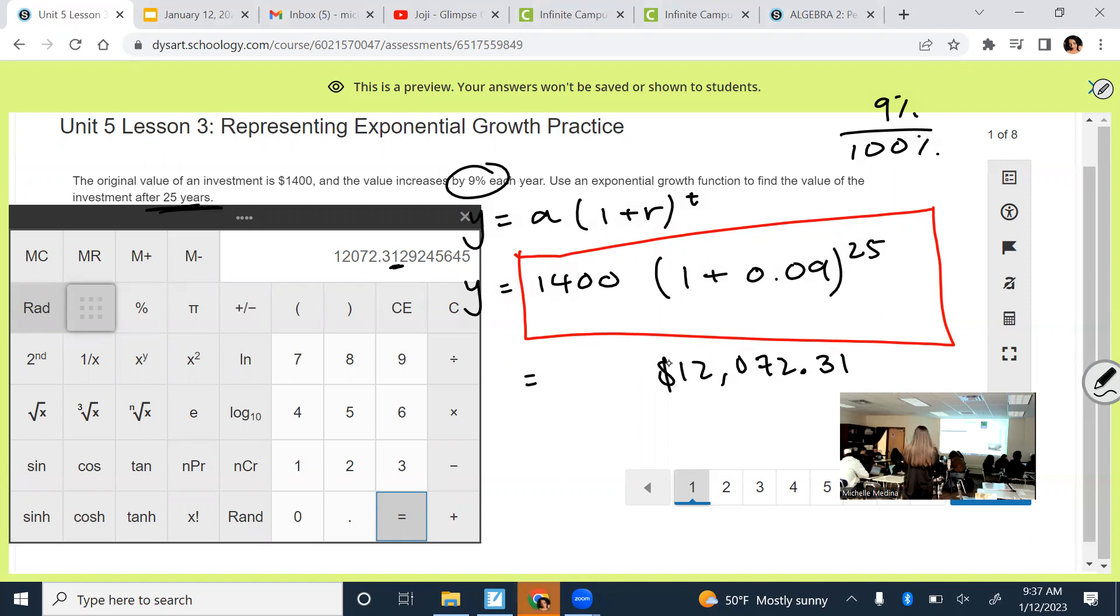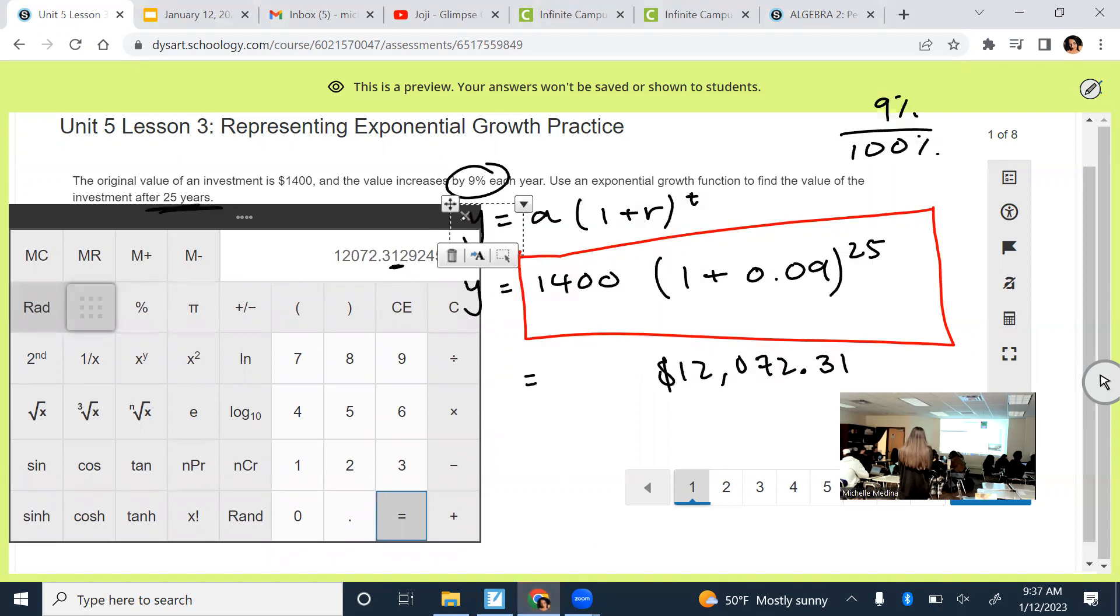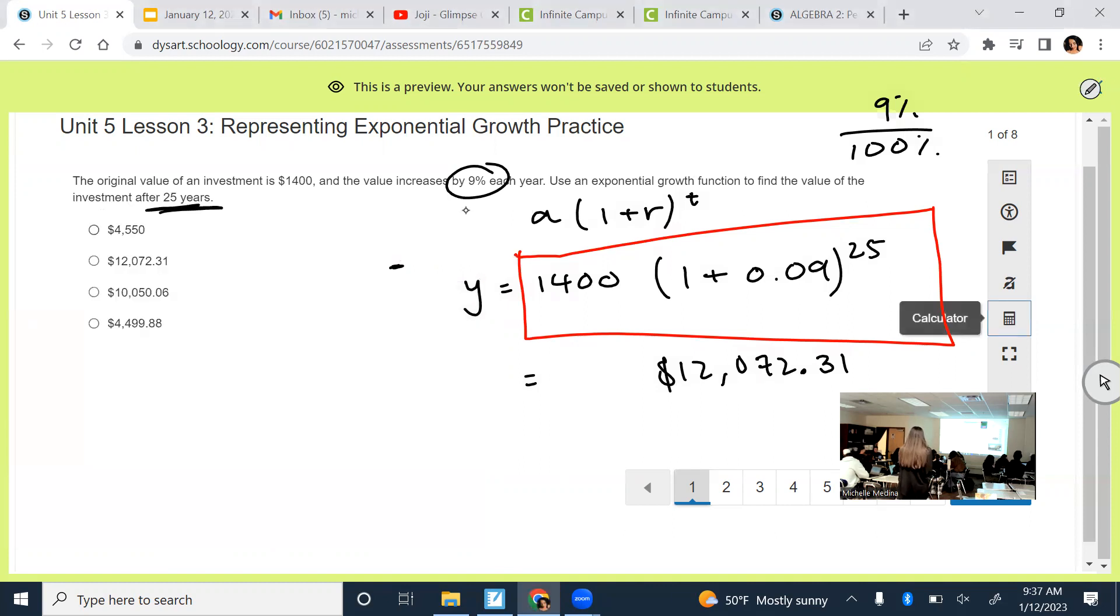We're talking about money in this problem. So what should I probably round to? The hundredths place, two decimal points. Will it be .31 or .32? .31, according to our rounding rules. So $12,072.31. Questions about that?